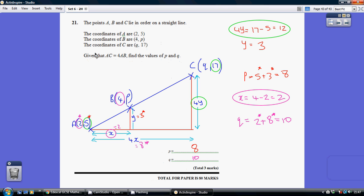Now we're also told that AC, the length AC is 4 times bigger than AB. So we have the length AB, we times it by 4 to get AC.